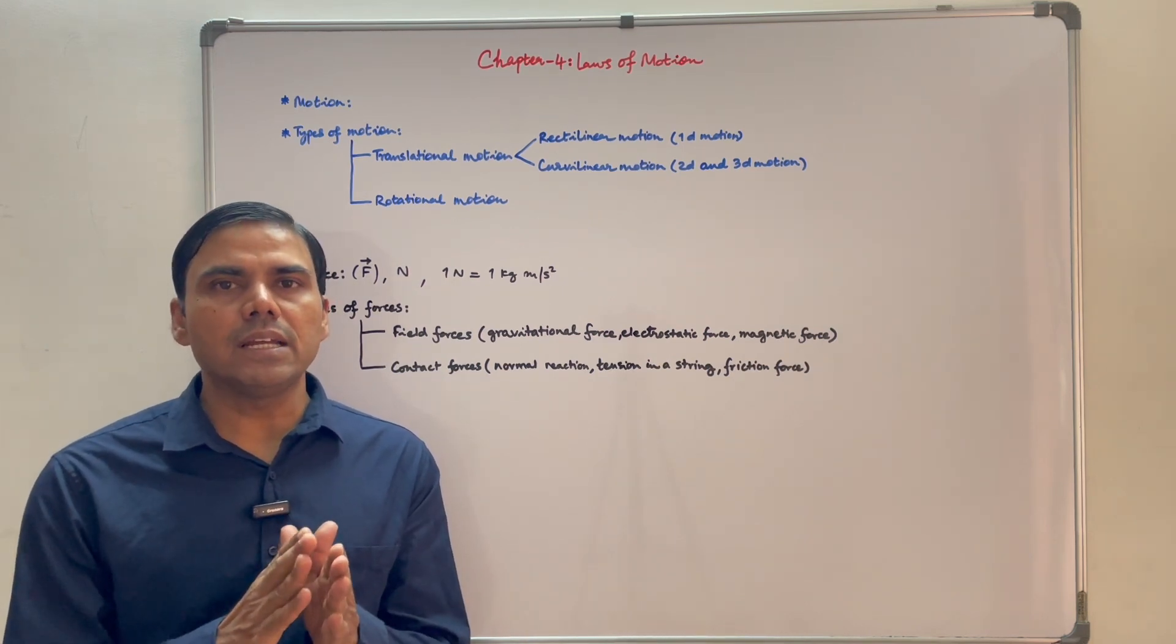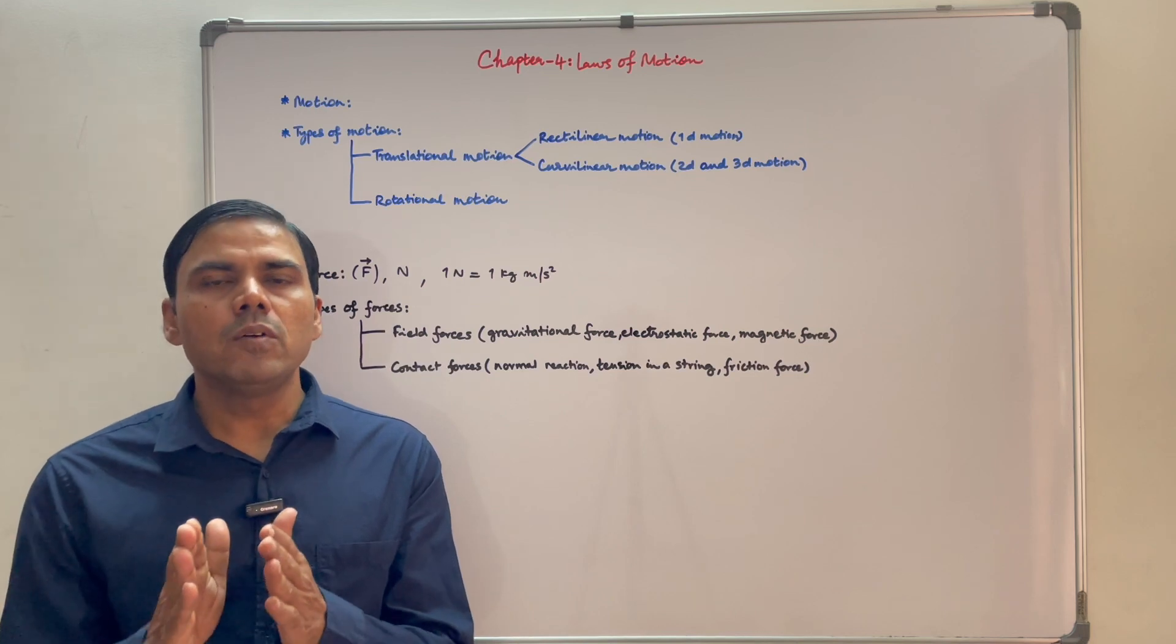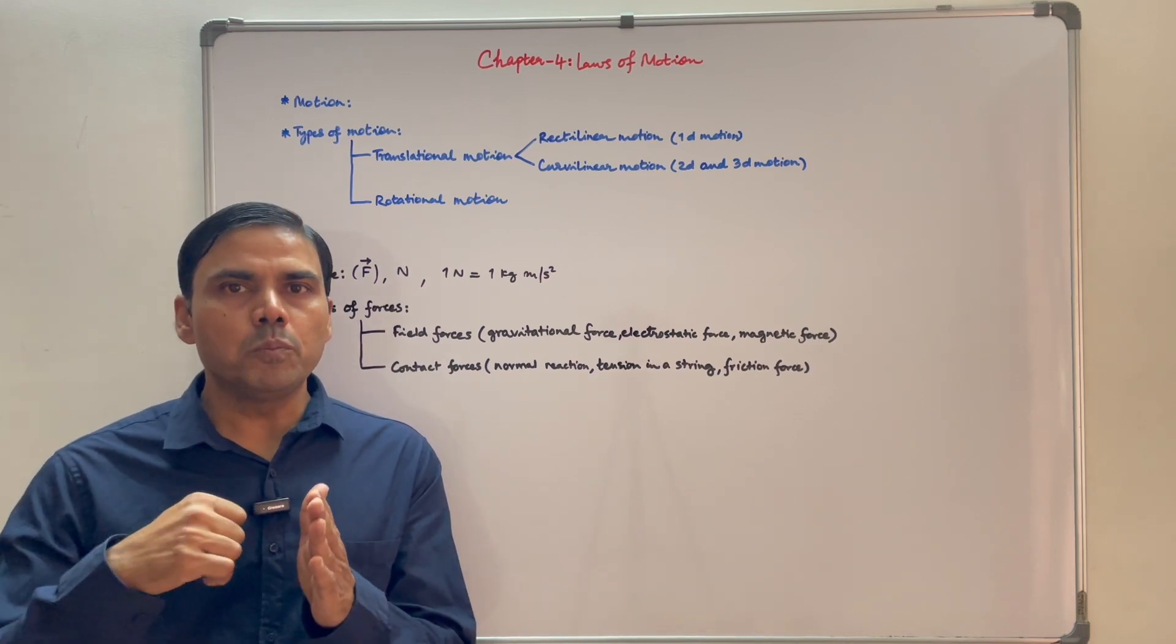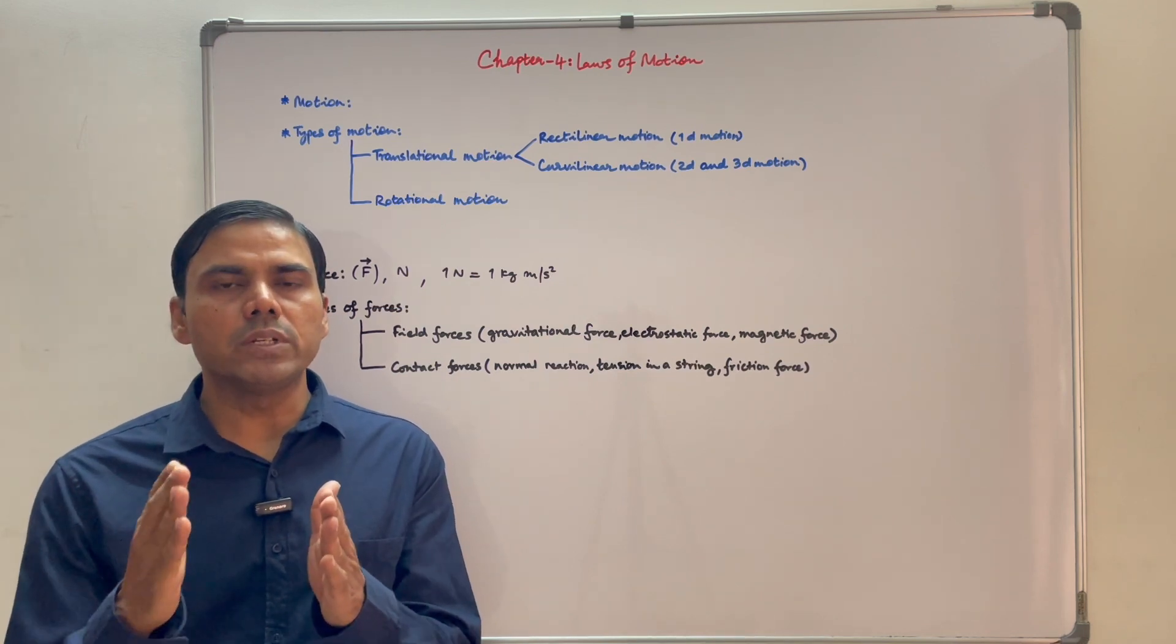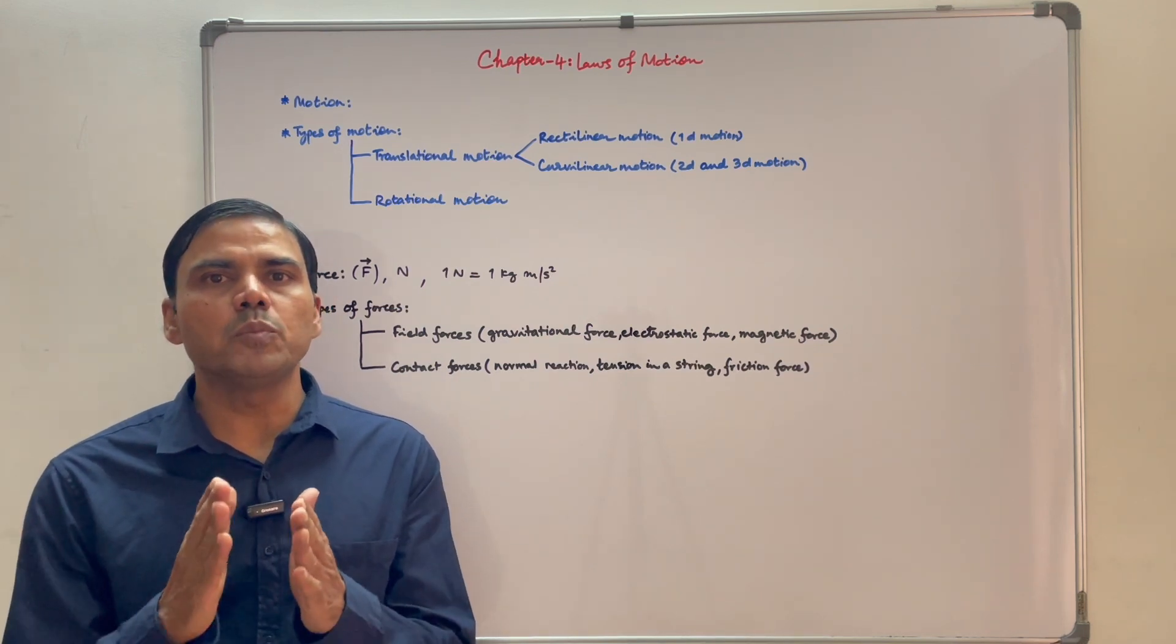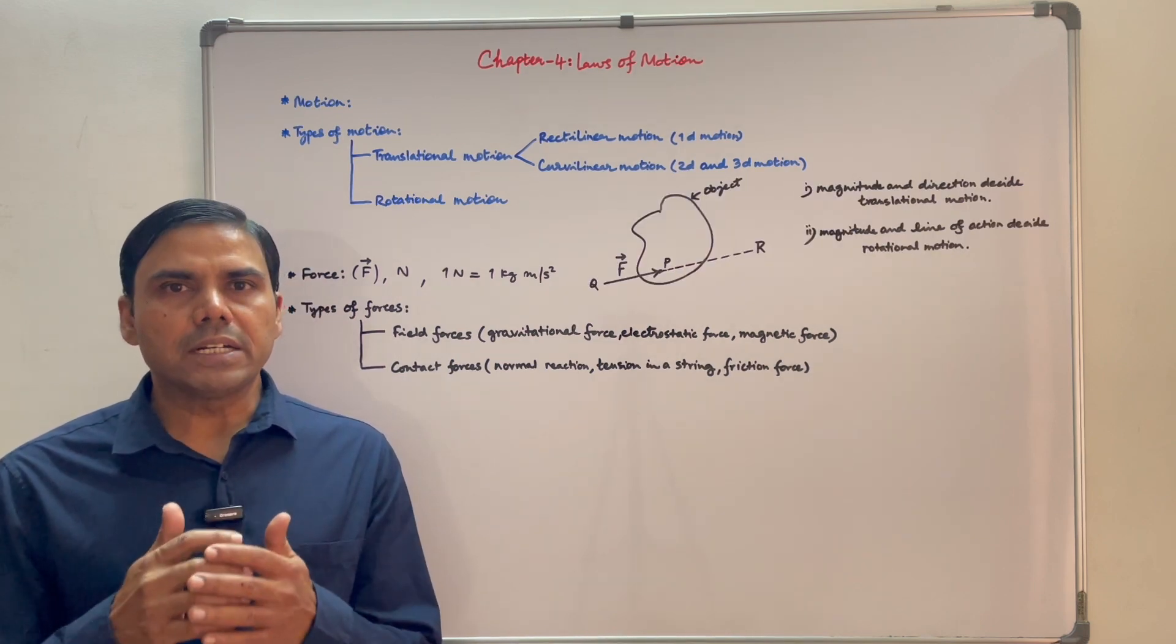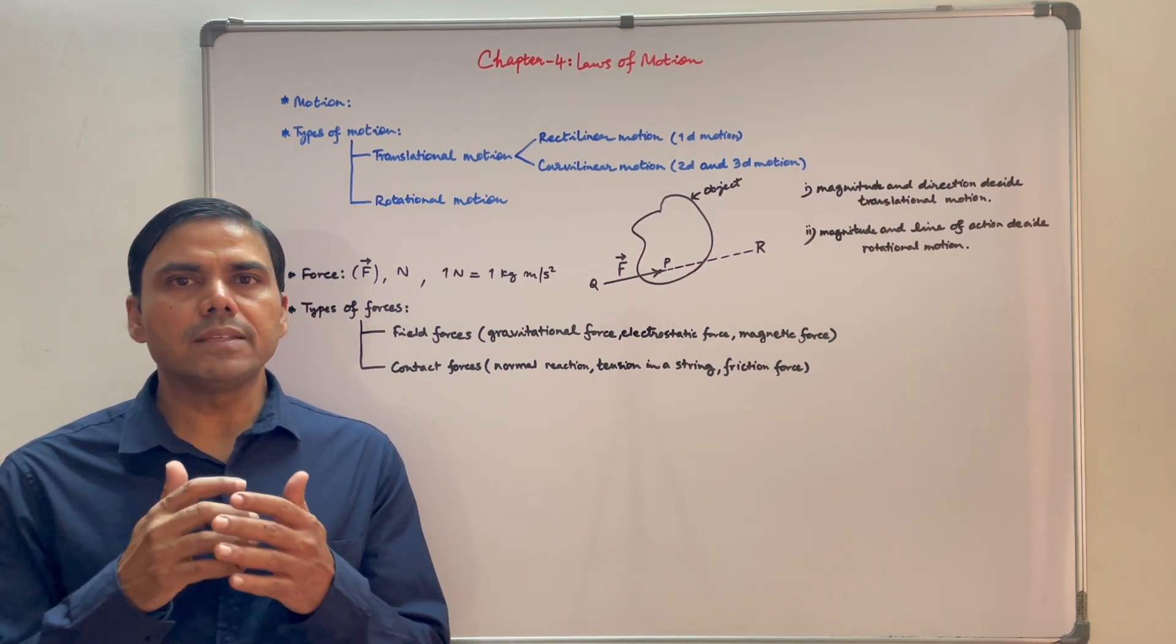Anyone can be called as action and the other one reaction. For example, when you try to push a table, table applies equal and opposite force on your hands to resist any change in its position. Force is a vector quantity. It has magnitude as well as direction.